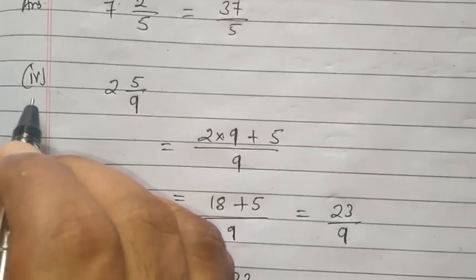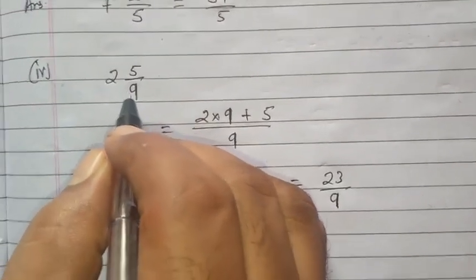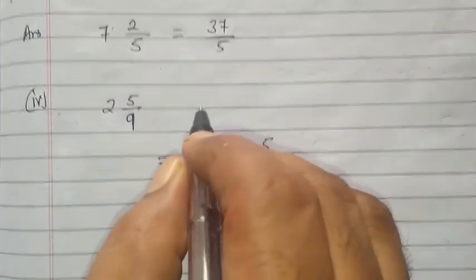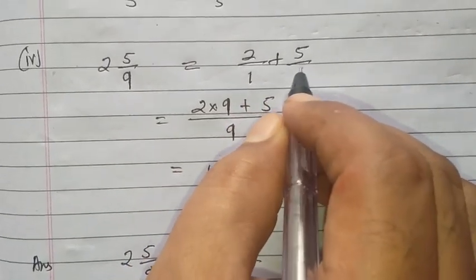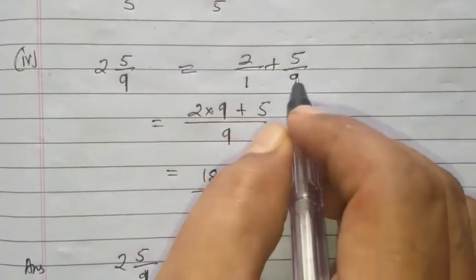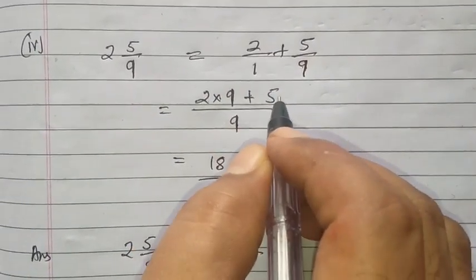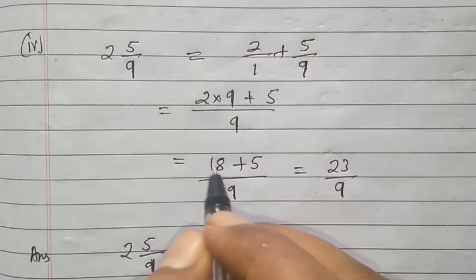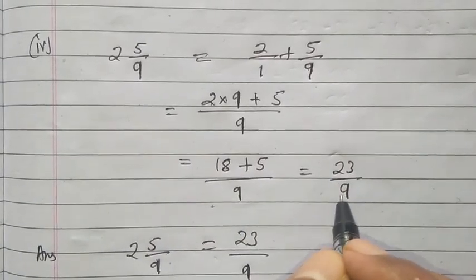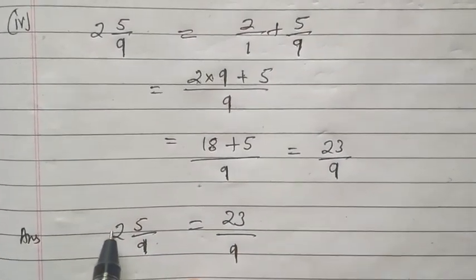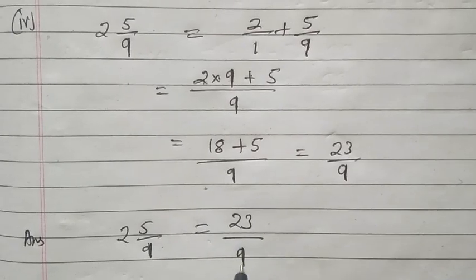Now come to Question Number 2. 2 5/9, this one is a mixed fraction. We want to convert to improper fraction. Again, we are able to write 2/1 plus 5/9. Then we have to take the LCM. What is the LCM? 9. 9 multiply here. 2 times 9 plus 5. So 2 nines are 18 plus 5 upon 9. 18 plus 5 is 23 upon 9. So what is the answer for this? 2 5/9 is equal to 23/9.